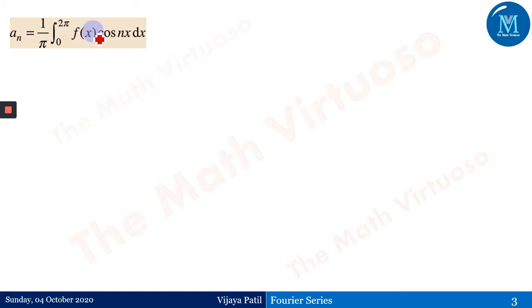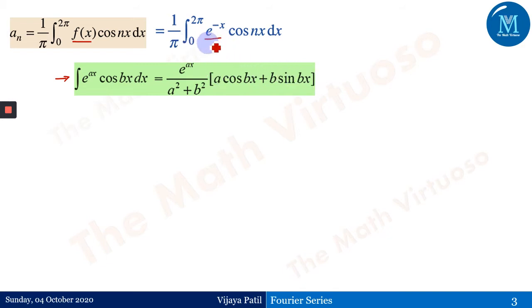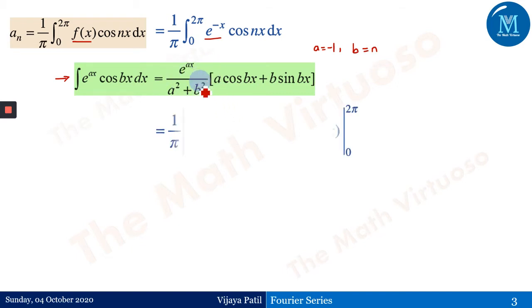For aₙ, the formula is (1/π) ∫₀²π f(x) cos(nx) dx. Substituting f(x) = e^(−x) gives ∫ e^(−x) cos(nx) dx. We use the known integration formula: ∫ e^(ax) cos(bx) dx = e^(ax)/(a²+b²) · [a cos(bx) + b sin(bx)]. Comparing e^(−x) cos(nx) with this, we identify a = −1 and b = n.